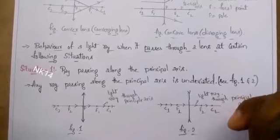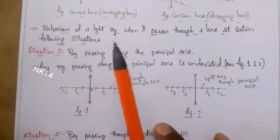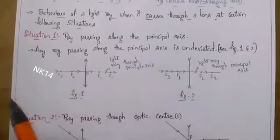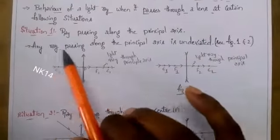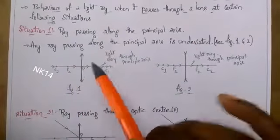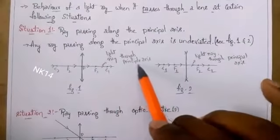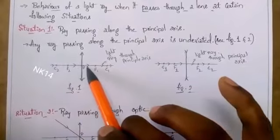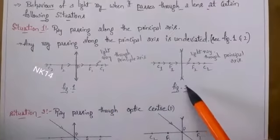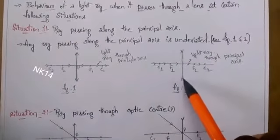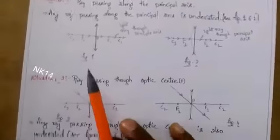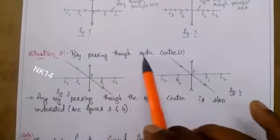Situation 1: a ray passing along the principal axis. Whenever a ray is passing along the principal axis, it is undeviated — it does not deviate at all. In the figure, the light ray passes along the principal axis and continues without bending. The same is true for the concave lens — a ray passing along the principal axis will not deviate.